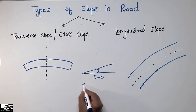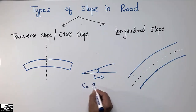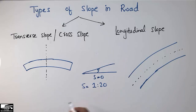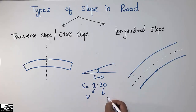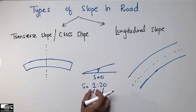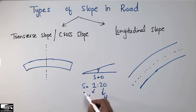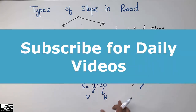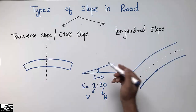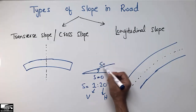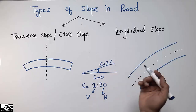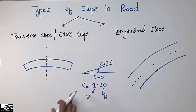Slope may be expressed in percentage or in ratio. For example, sometimes we say the slope is 1:20, which means for every 20 units of horizontal distance there is 1 unit of vertical rise. The slope is dimensionless — it has no unit. The other way of expressing slope is in percentage; for example, we say the slope is 2 percent or 3 percent.